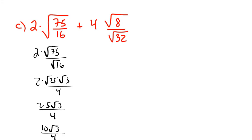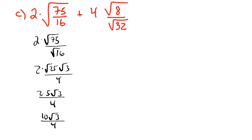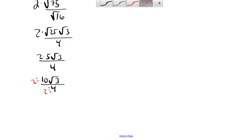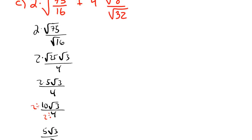That gives us 10 radical 3 over 4. One more step: 10 and 4 have a common factor. I divide the top by 2 and the bottom by 2 — 10 divided by 2 is 5, and 4 divided by 2 is 2. So the left side simplifies to 5 radical 3 over 2.